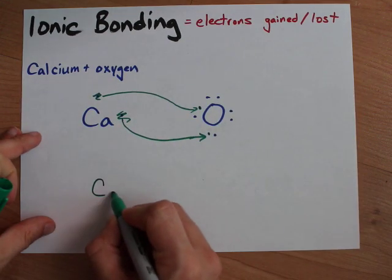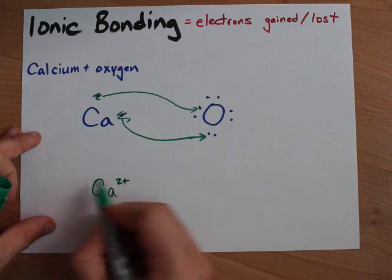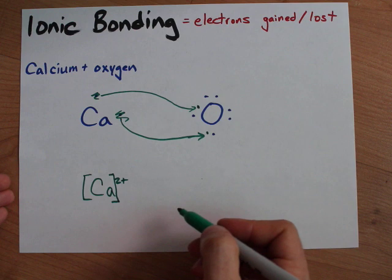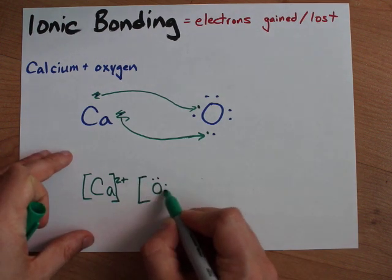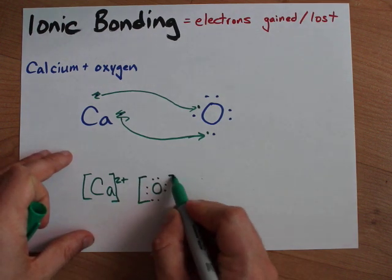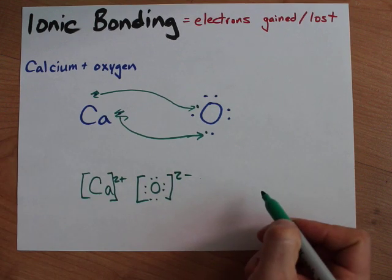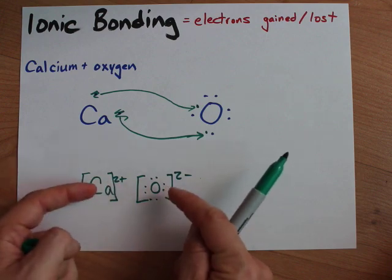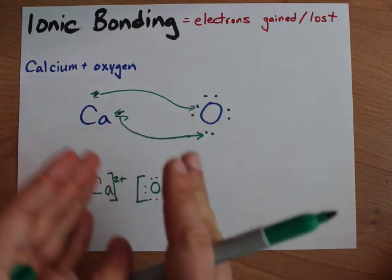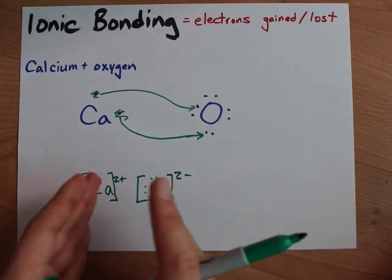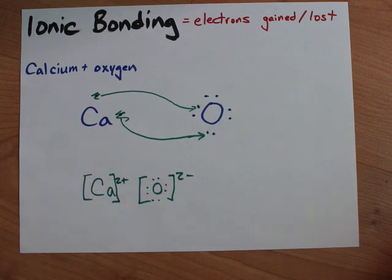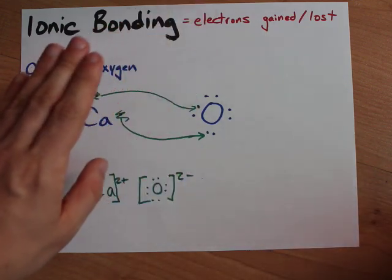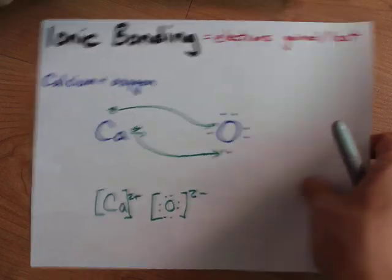Oxygen gained those two electrons to have a full second shell as well. You now have a calcium atom with a 2-plus charge — all it had to do was give away its two valence electrons — and an oxygen atom with eight valence electrons and a 2-minus charge. That 2-minus and 2-plus cause calcium and oxygen to hold together in an ionic lattice, and there's an ionic bond between these two ions. That was probably the easiest example you could find. Let's do some more examples together.